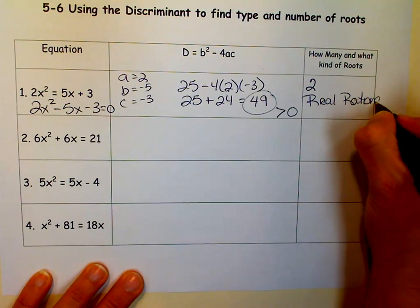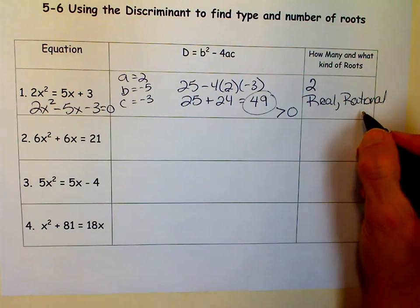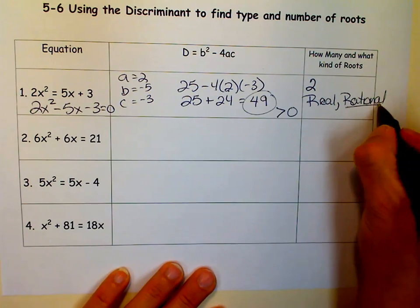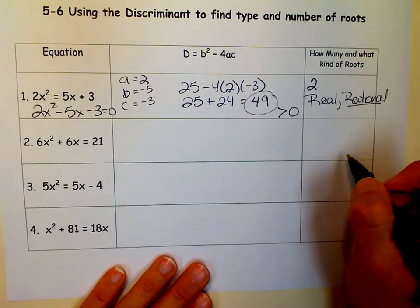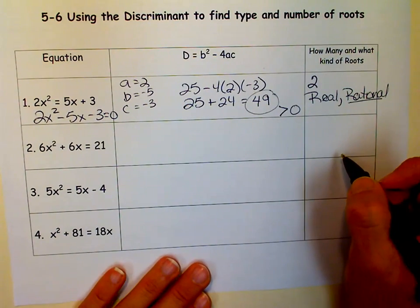And I don't know if your teacher makes you say real and rational. If it's rational, you know it's real. So you might be able to just say two rational roots. Remember, we're not finding the roots here. We're not solving, we're just finding what kind and how many.